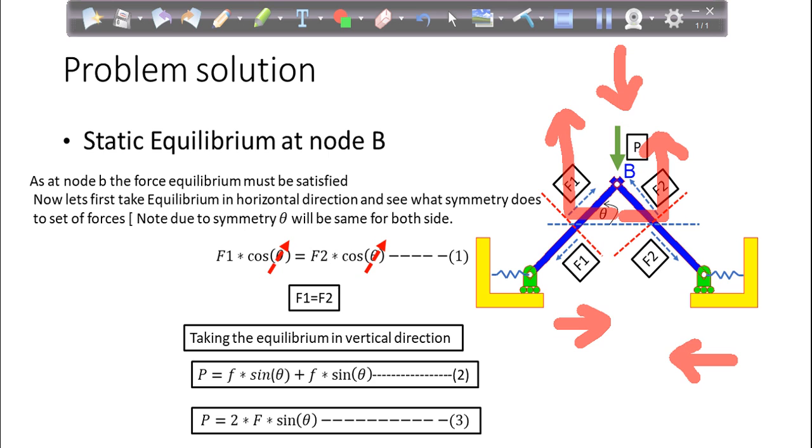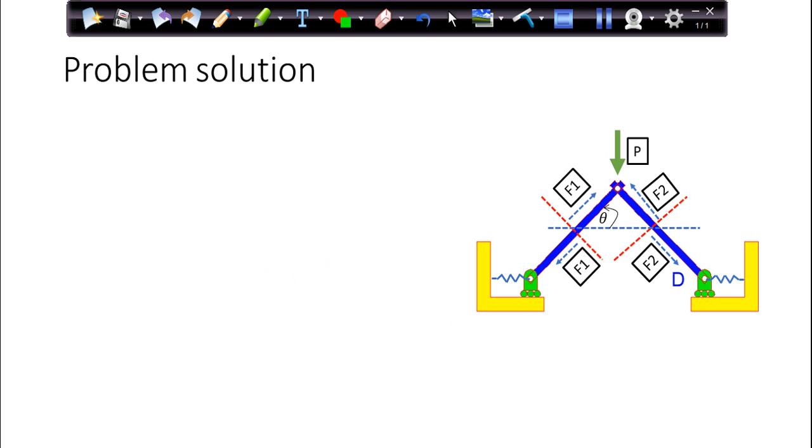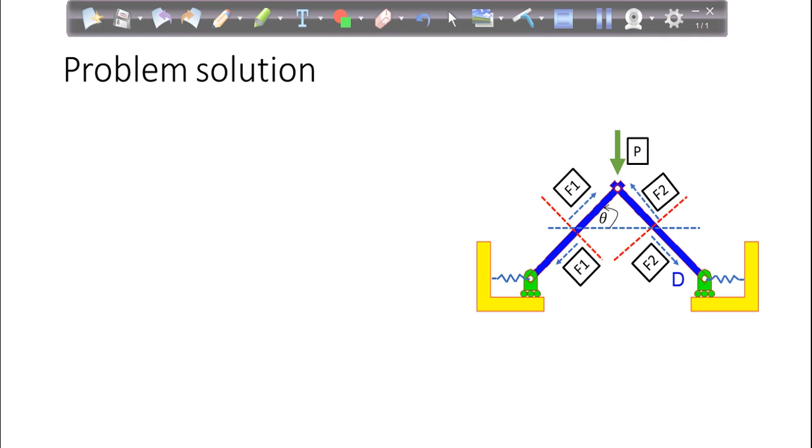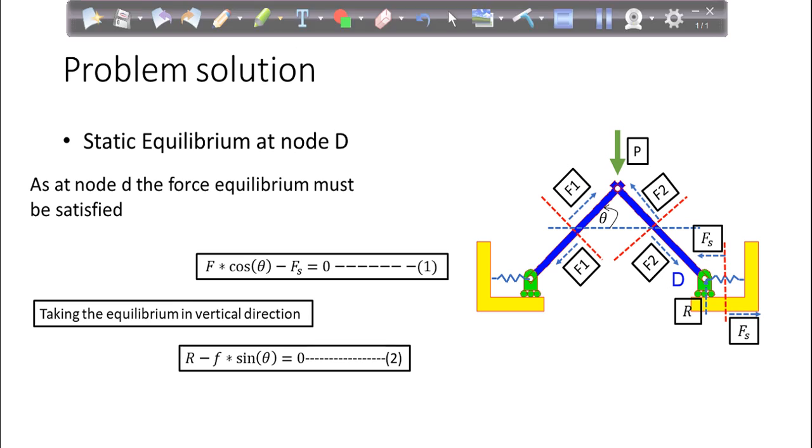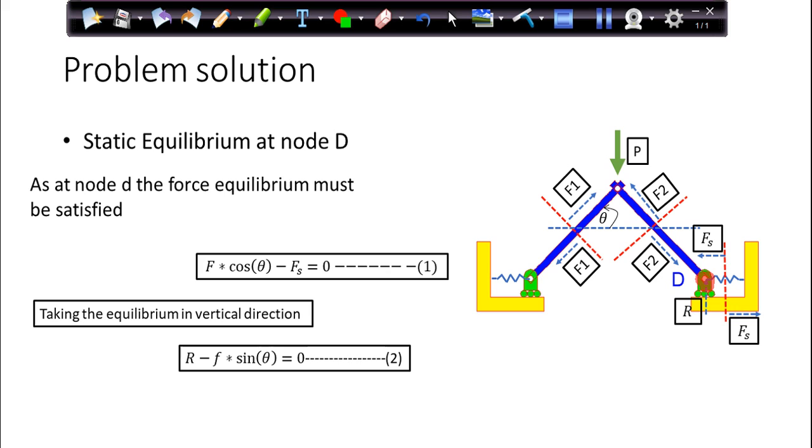Now we'll take another node, that is node D. Doing the static equilibrium at node D. What we'll get when we do the force balance at node D? We are taking this section here at node D. Let me show you the force balance. When you do for node D, which is here right now.